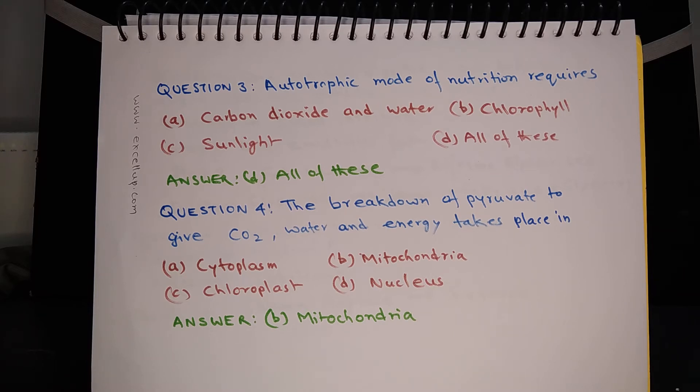Question 4: The breakdown of pyruvate to give carbon dioxide, water, and energy takes place in cytoplasm, mitochondria, chloroplast, or nucleus. The answer is mitochondria. This can be confusing for many of you. You should always remember that the breakdown of glucose up to pyruvate acid takes place in cytoplasm, and rest of the steps of cellular respiration take place in mitochondria where pyruvate acid is further broken down in order to produce energy.